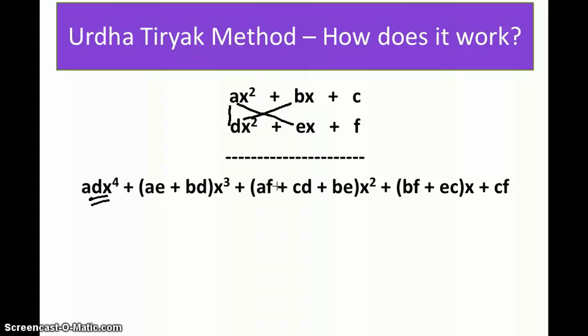Similarly, to get the coefficient of x², I multiply af, cd, and be. To get the coefficient of x, I multiply bf and ec. And to get the coefficient of x to the power 0, or without any term related to x, I multiply c times f.